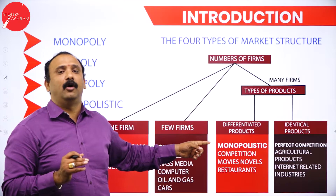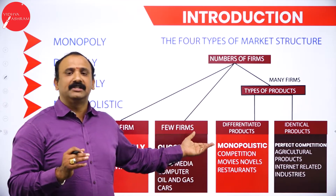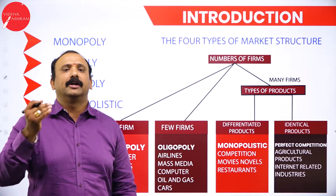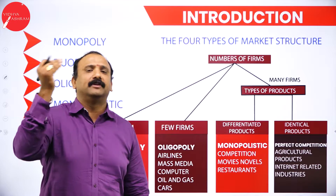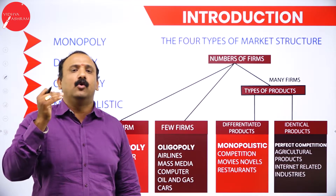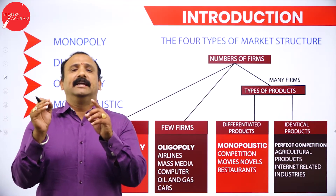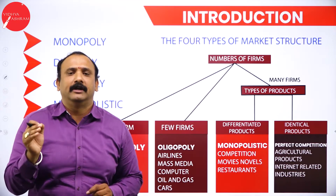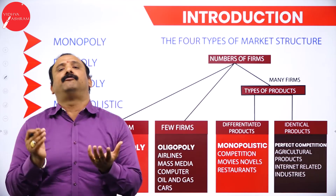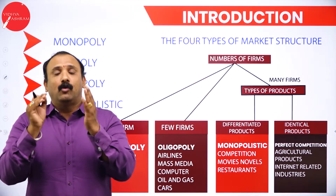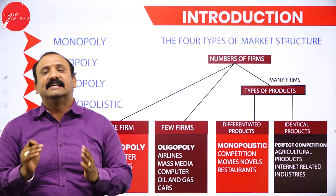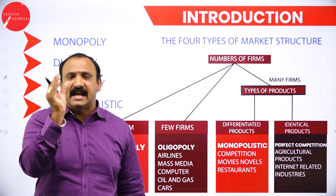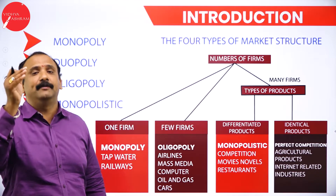Monopolistic competition is a very interesting form of business. Movies, novels, and restaurants are all monopolistic. In India, different restaurants in Bangalore, Chennai, Mumbai, Delhi, or any city have their own flavor and type. At the end of the day you are going to have food anywhere, but what differentiates them is the service, the pricing, and the ambience. Monopolistic competition is all about a differentiated product — the same thing presented in a different manner.